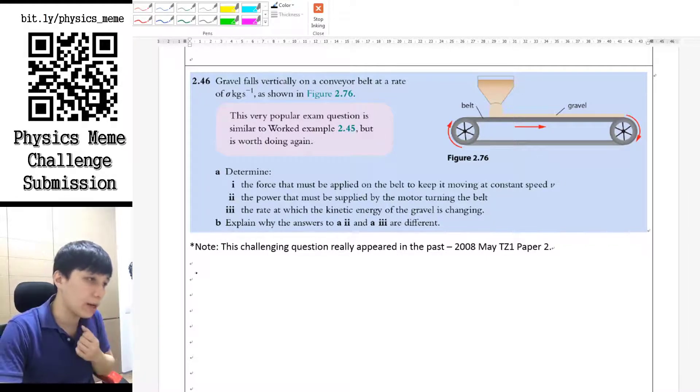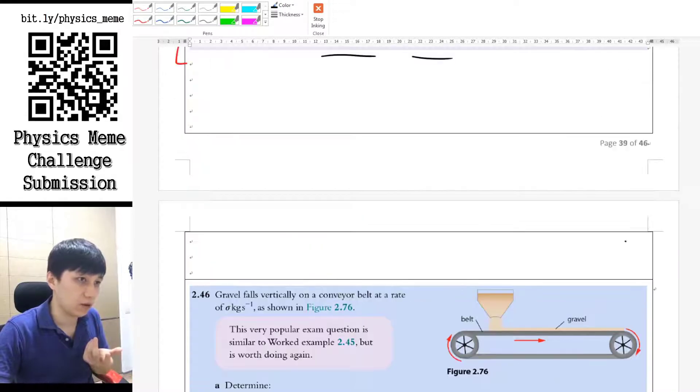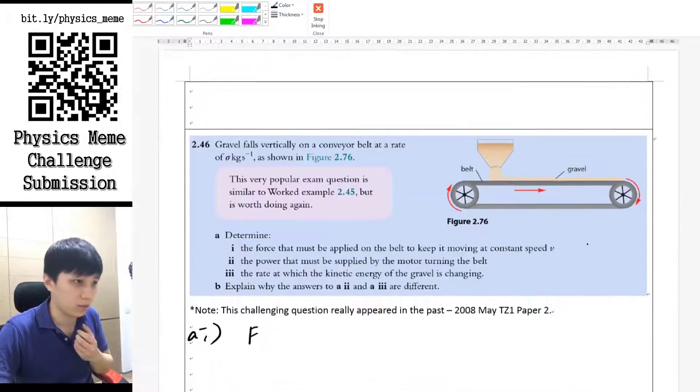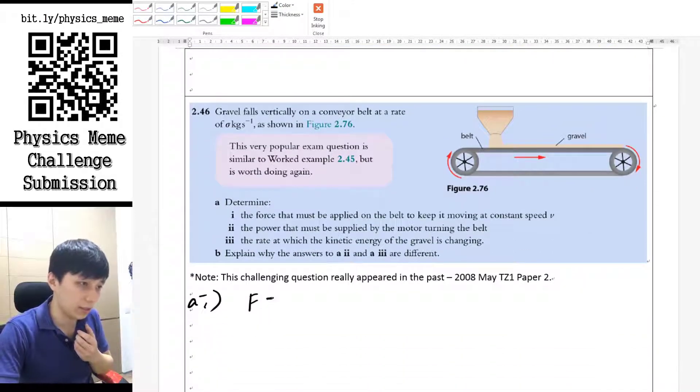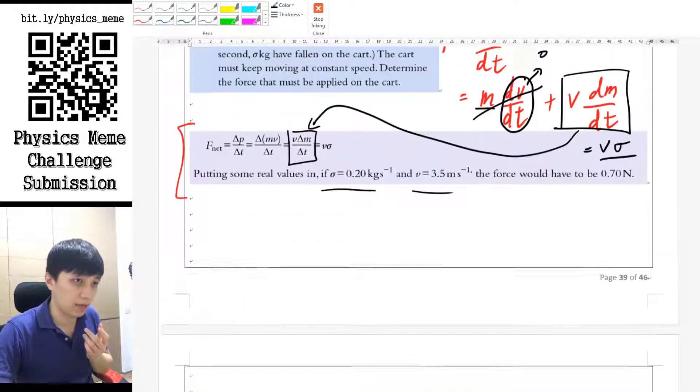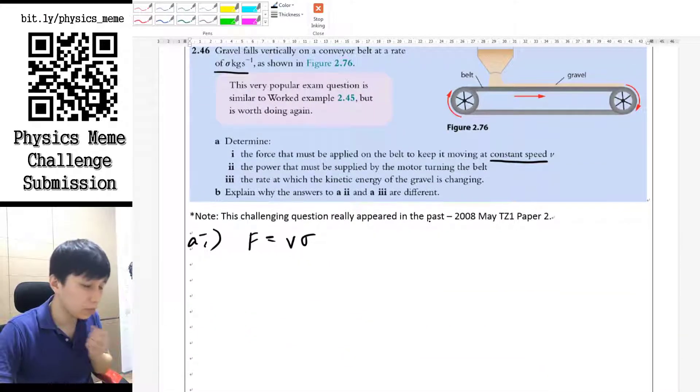So for part a1 is asking you the force that is needed. In fact, this is the same question as what we have earlier here, so you can go through the same process. You should still find the answer as v sigma because it is also keeping at a certain rate and also keeping the speed as constant, so you don't have the other term right here, so it will become zero also.